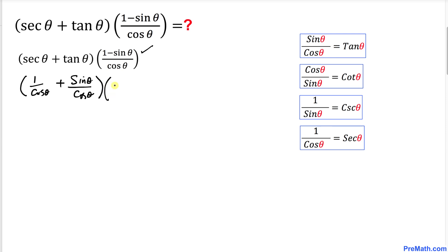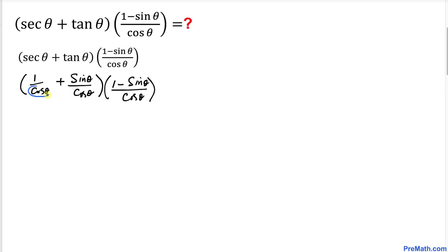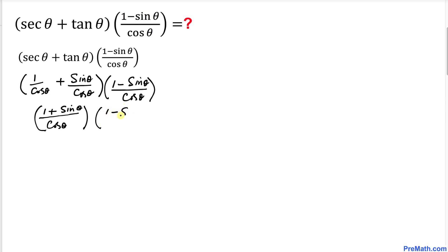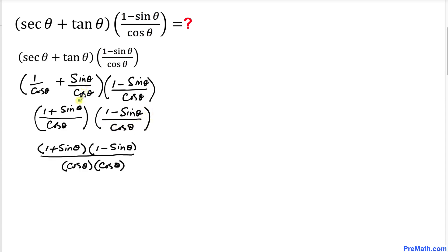I'm going to leave the remaining part as (1 minus sine θ) divided by cosine θ. Now we can see that the denominators are all cosine θ, so we can write cosine θ as the common denominator. On the numerator I write (1 + sine θ), and then times (1 minus sine θ), divided by cosine θ. I have put the numerators together and likewise the denominators together.